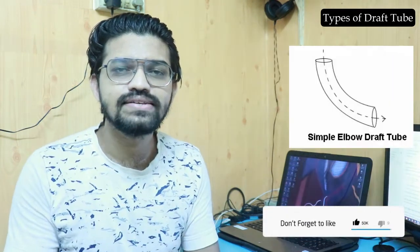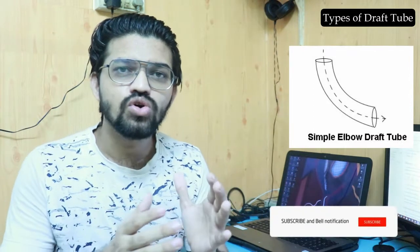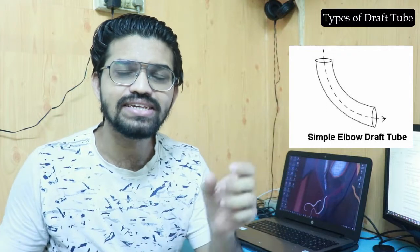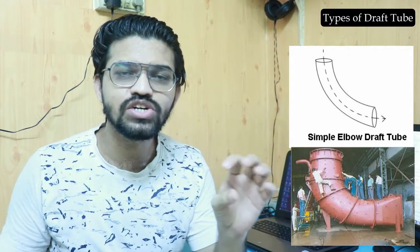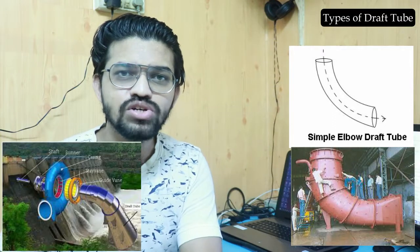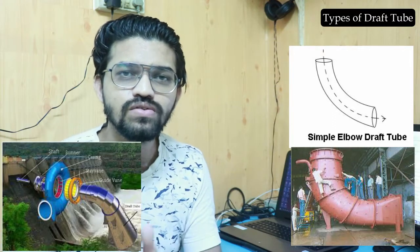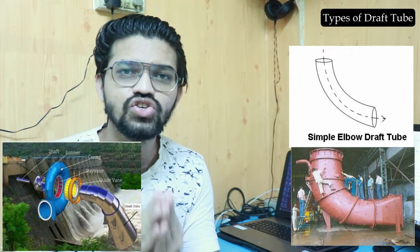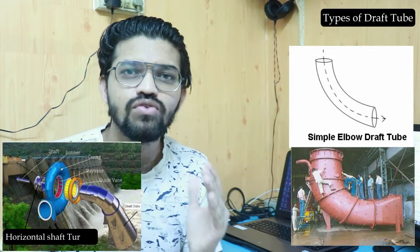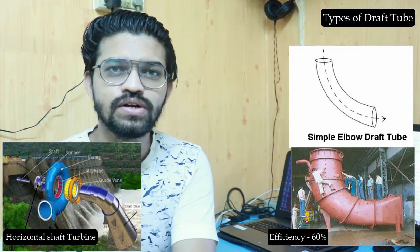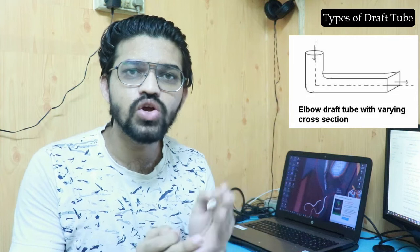The next type is the simple elbow draft tube. This type of draft tube is bent at 90 degrees — one end is connected to the exit of the turbine and the second end is immersed into the water. This type is suitable for the horizontal shaft, horizontal axis Francis turbine, and it provides efficiencies up to 60%.